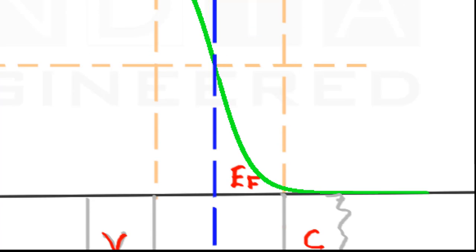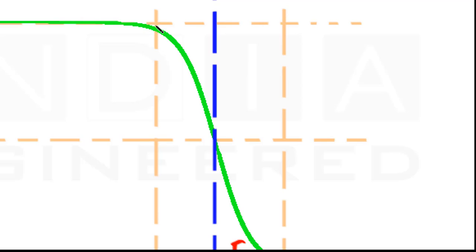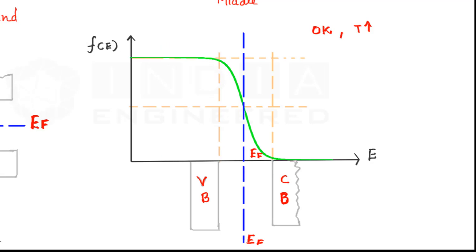And if you look at here, now we have some probability of electrons missing from the valence band. So, this is what happens as temperature increases.